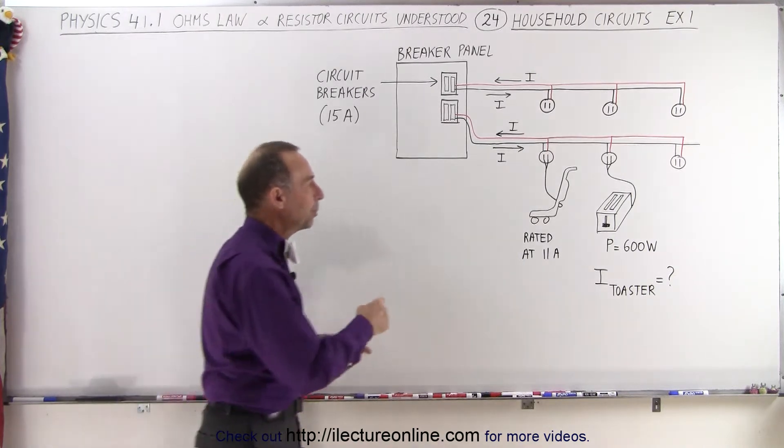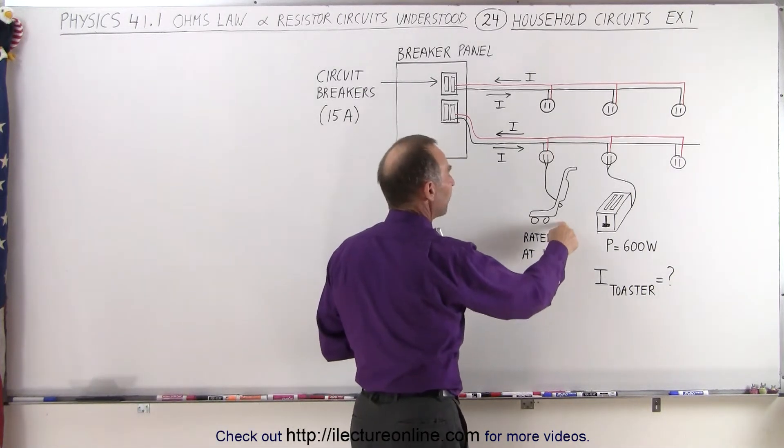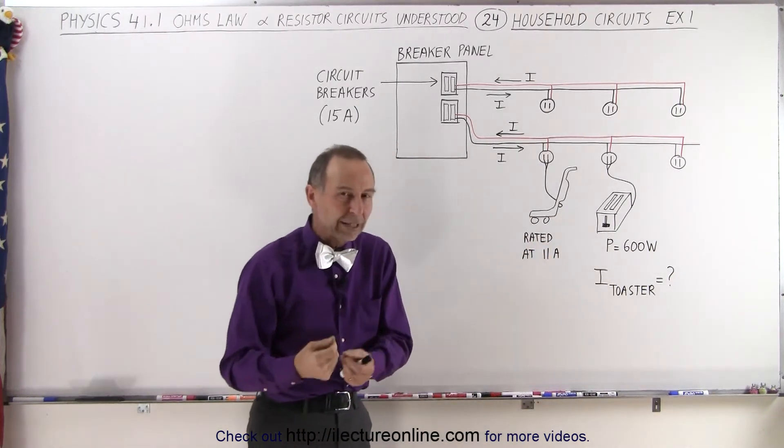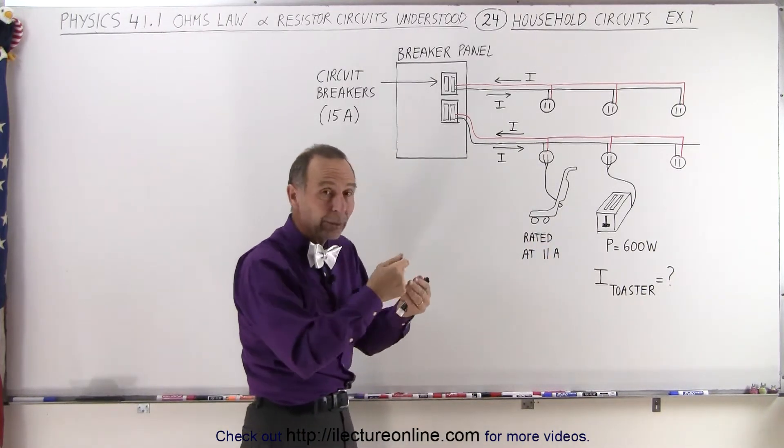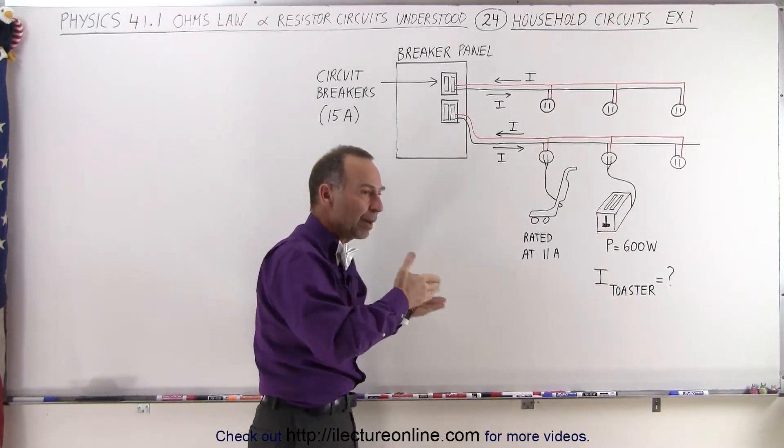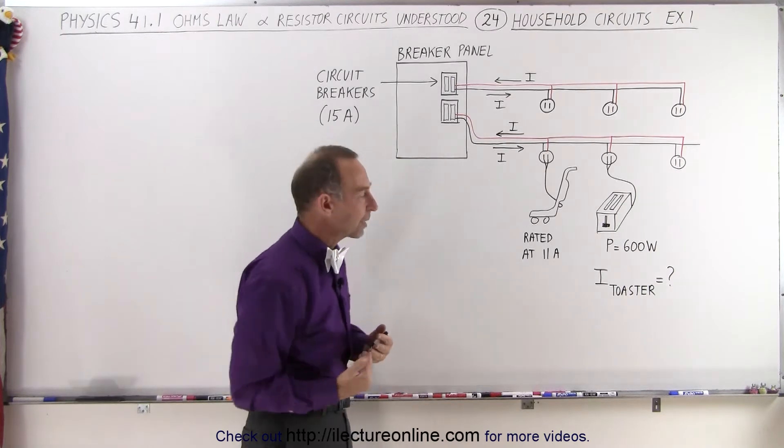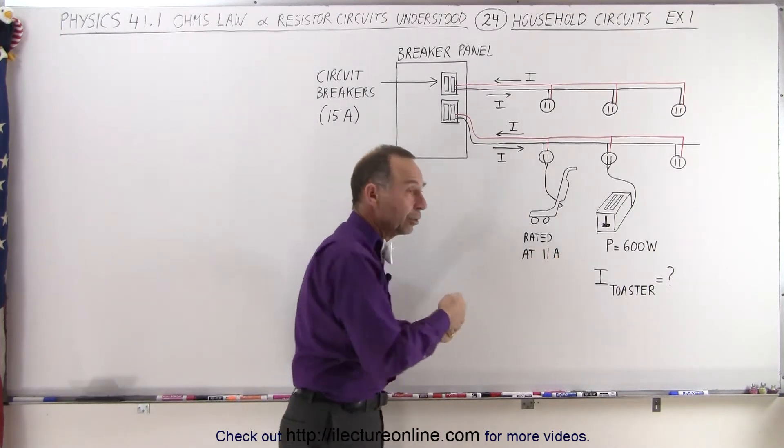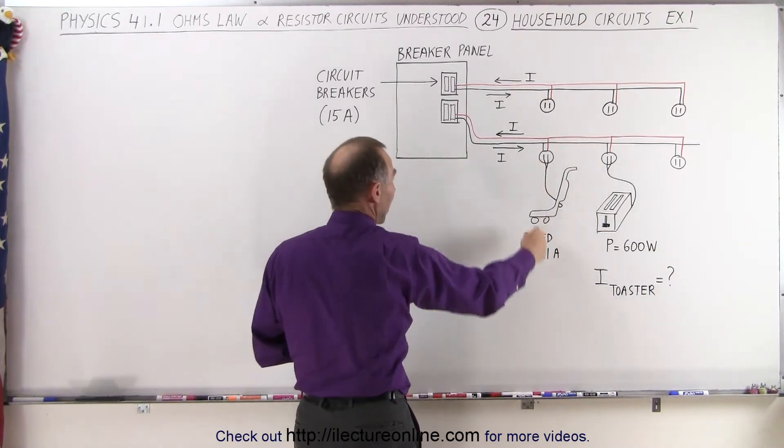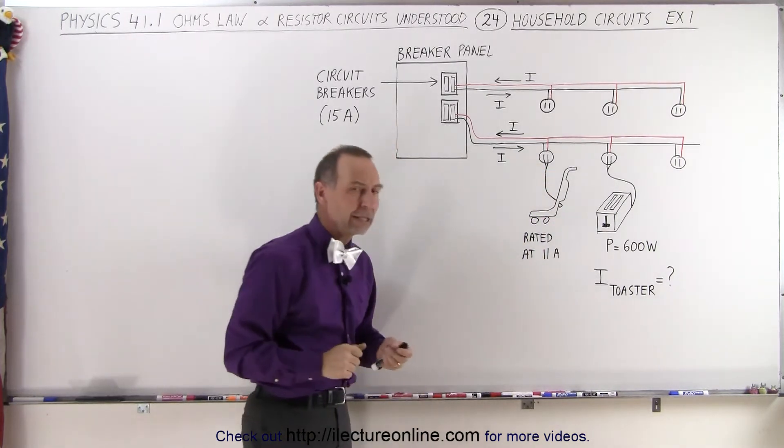Now here we have an example where this particular circuit hooks up a vacuum cleaner which is rated at 11 amps. Most vacuum cleaners when you purchase them will tell you what the current draw will be. It requires a certain amount of power to operate the motor in the vacuum cleaner, so they tell you it'll draw 11 amps. 11 amps is less than 15 amps, so that should not be a problem by hooking up your vacuum cleaner.